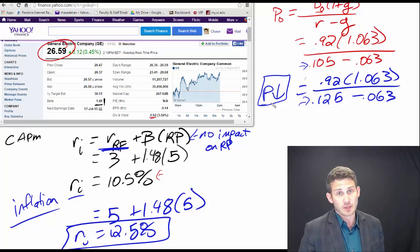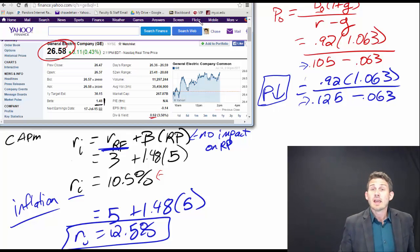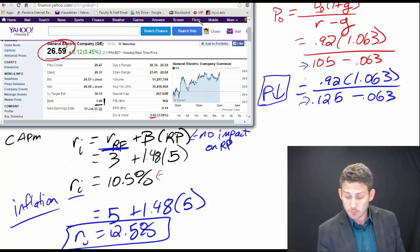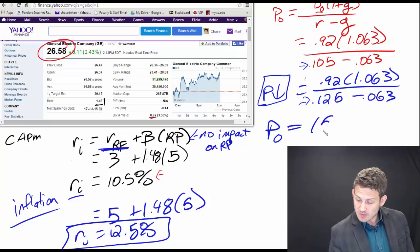So we know that when we have unexpected inflation, the price level is going to fall. And this drops us down to a current price of fifteen dollars and seventy seven cents.